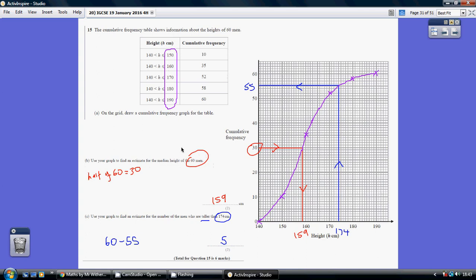Well, median is the middle height, so the height of the 30th man. So here's my 30th man. Go along until I hit the curve. Go down and take a reading. You need to have an answer of about 159.